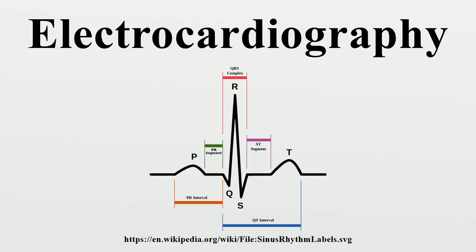In sinus tachycardia, the depolarization is still starting in the normal pacemaker of the heart, called the sinoatrial node. When the heart rhythm is no longer initiated in the sinoatrial node but is initiating in various atrial foci, the heart rate can become irregular and can develop into atrial fibrillation or atrial flutter.